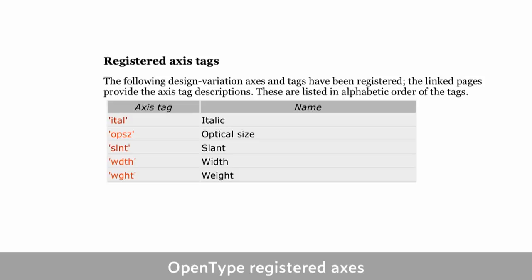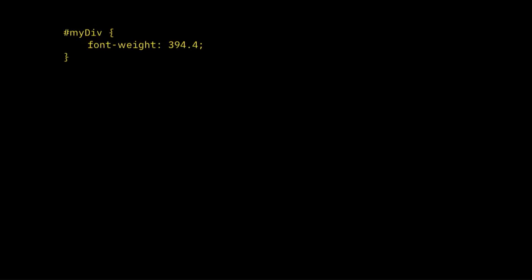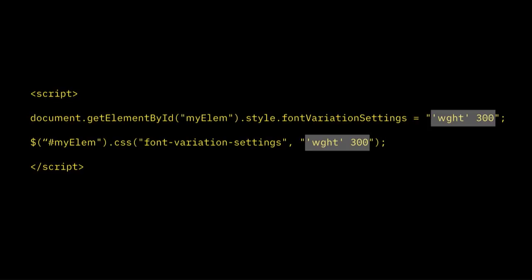Optical size is already implemented in Safari, so it will automatically change your font's optical size if it has an optical size axis. The font-weight property shows how it's defined: 400 is normal, 700 is bold, and we can use any floating-point value between 1 and 1000. So font-weight: 394 is the same as font-variation-settings: 'wght' 394.